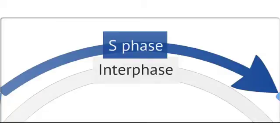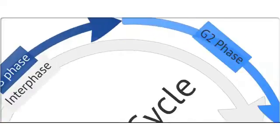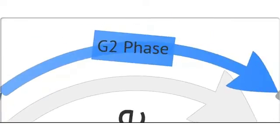After the DNA has been copied, there is another period of growth known as the G2 phase. During this phase, there is additional growth in size and protein content of the cell as it prepares to undergo cell division.